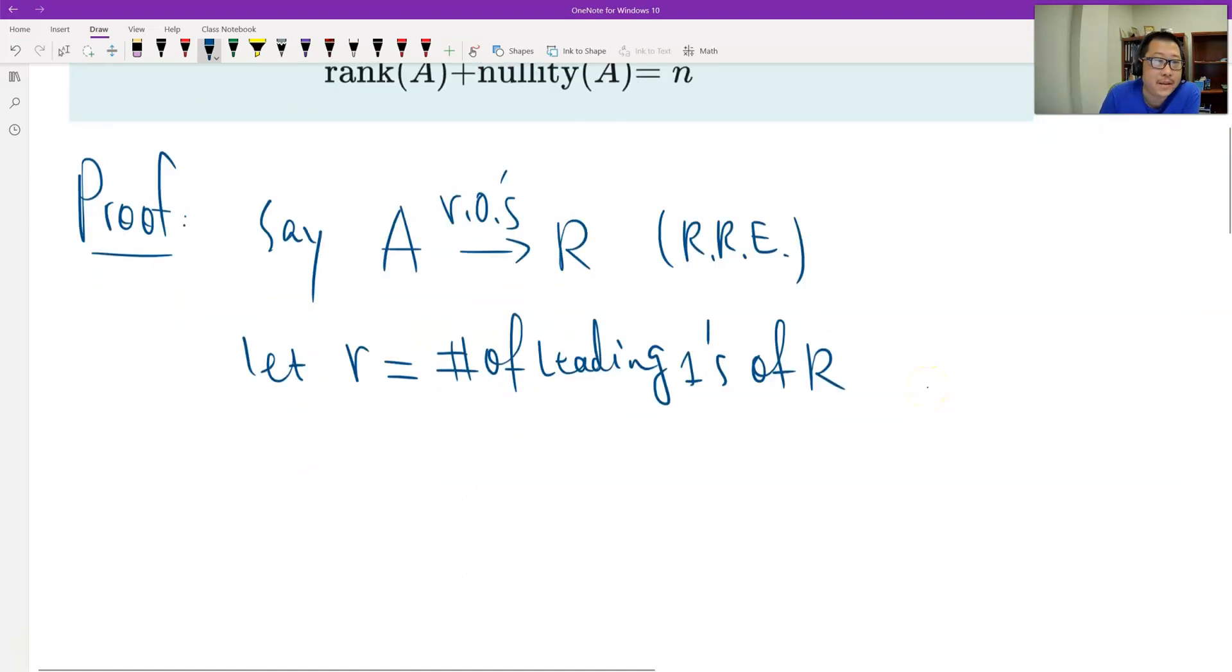First, for the rank. What is the rank of A? The rank could be the dimension of the row space or the dimension of the column space. Let me use the dimension of the row space. That's the definition, the dimension of the row space, and we proved that before.